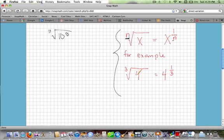For example, if I had the third root of 4, that'd be the same as having 4 to the 1 third. I'd just take the root and move it to the bottom term in my exponent.